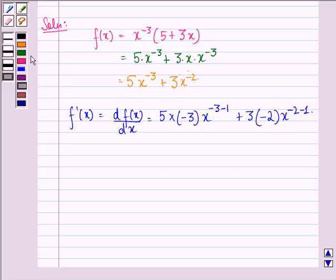Because the derivative with respect to x of x^n equals nx^(n-1). Now for the first term n is -3, and for the second term n is -2.